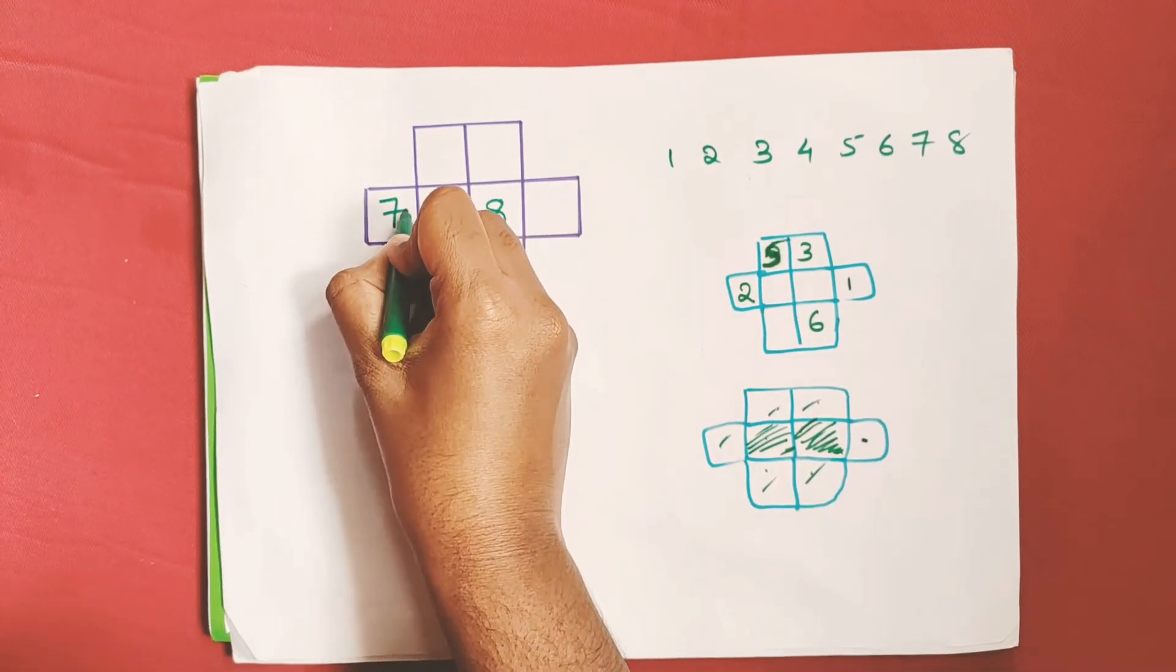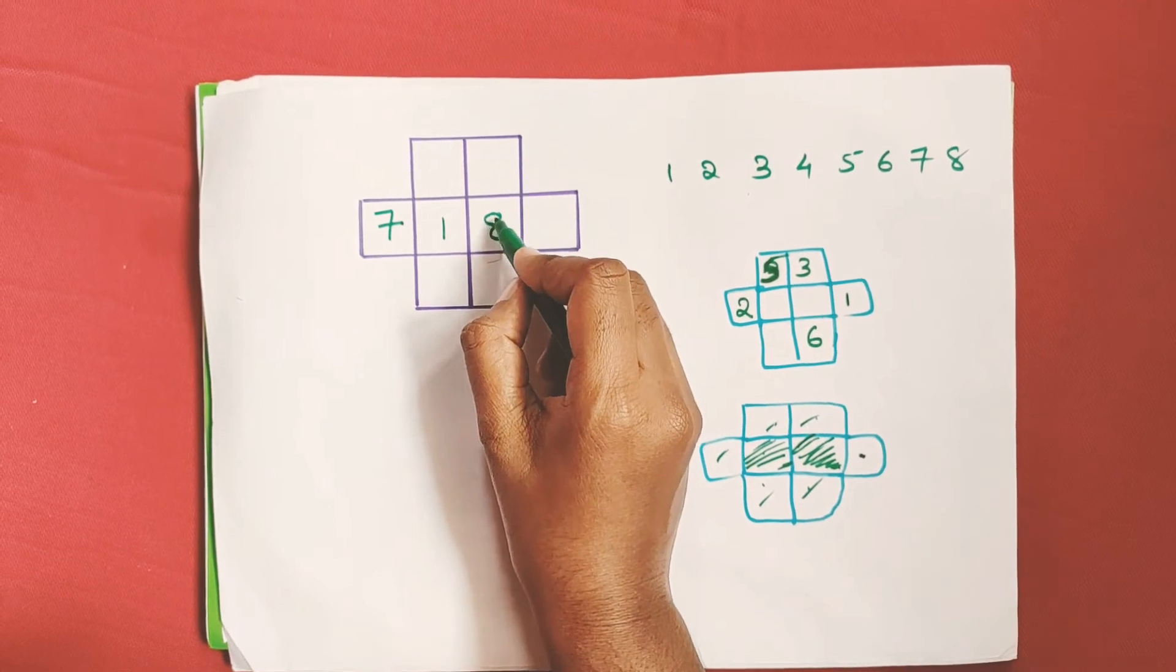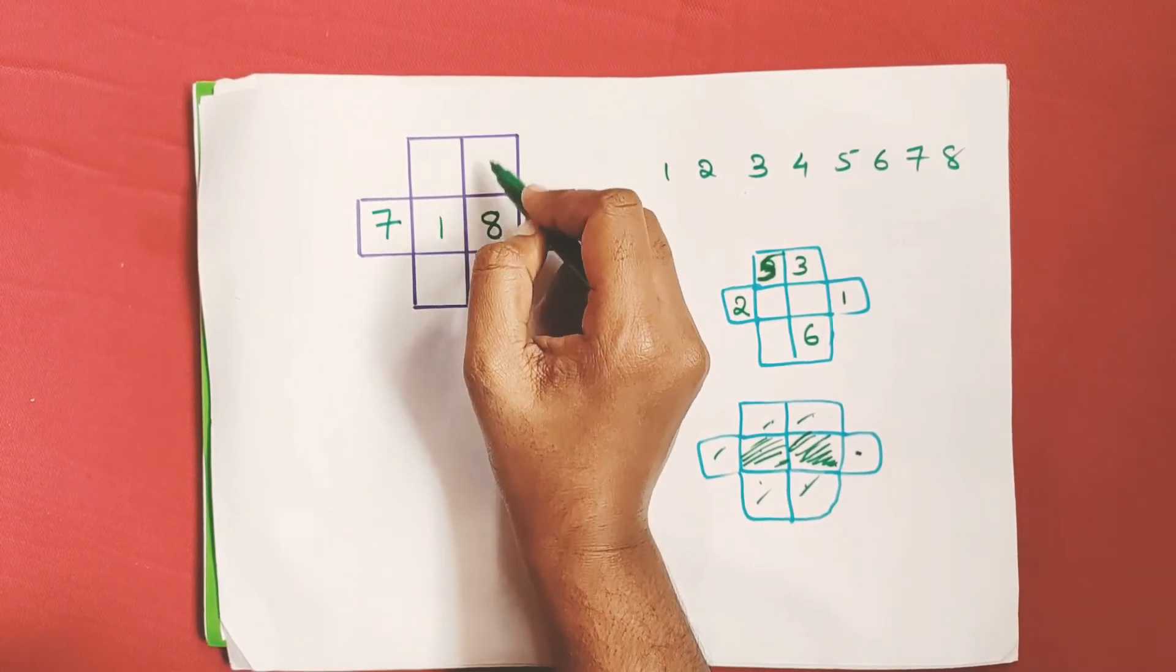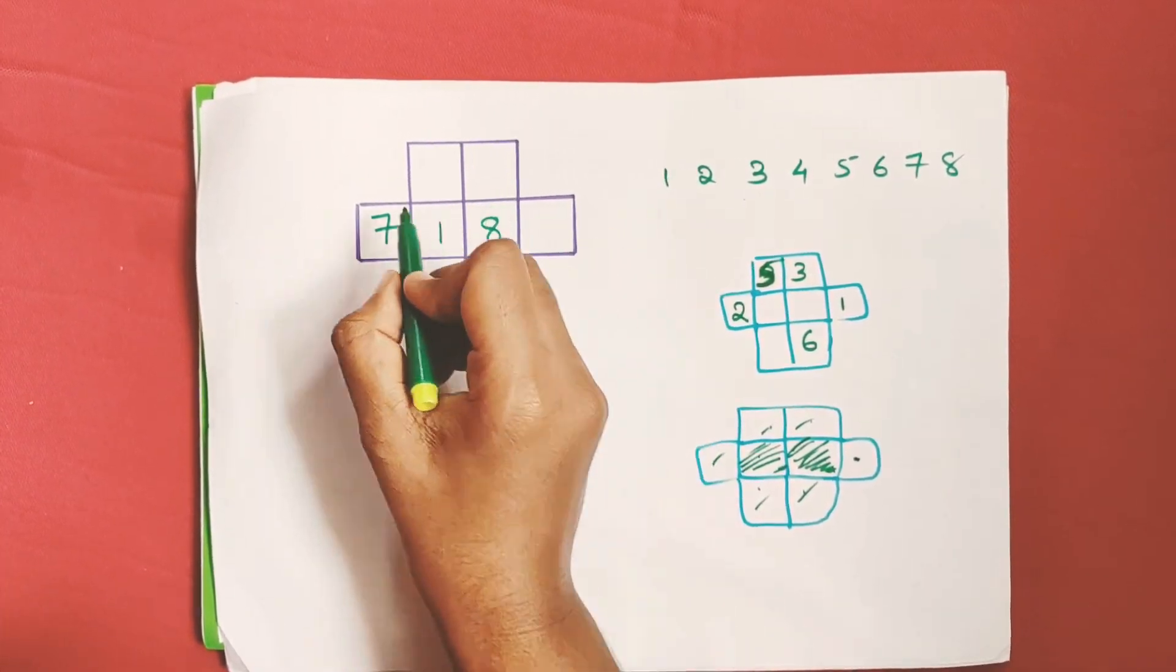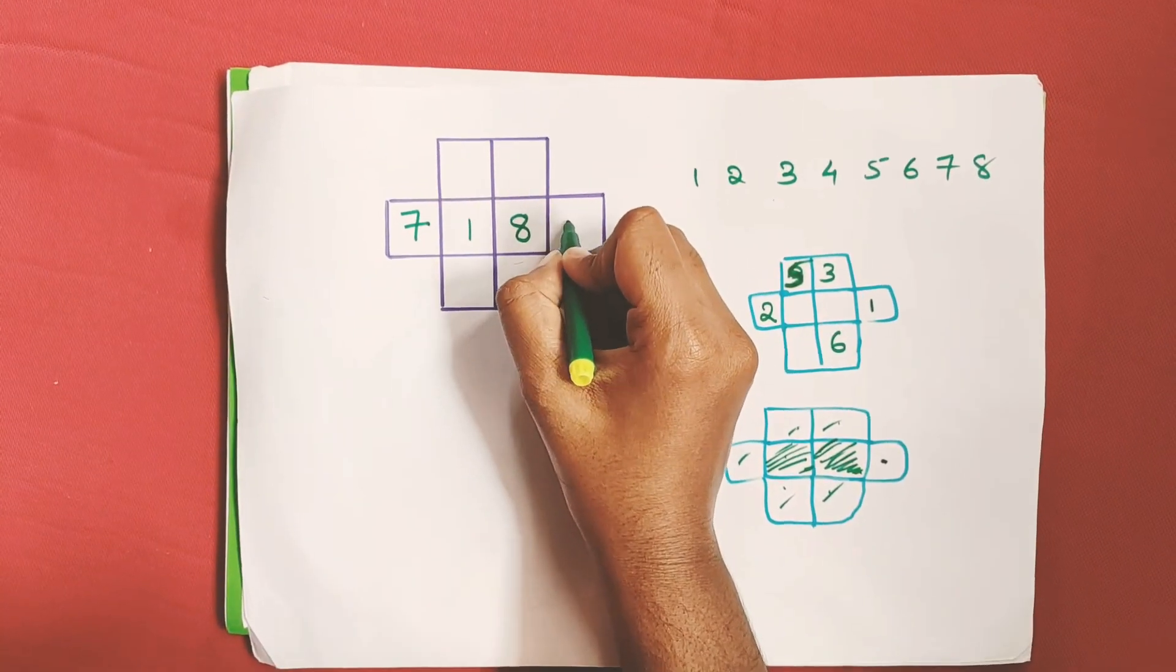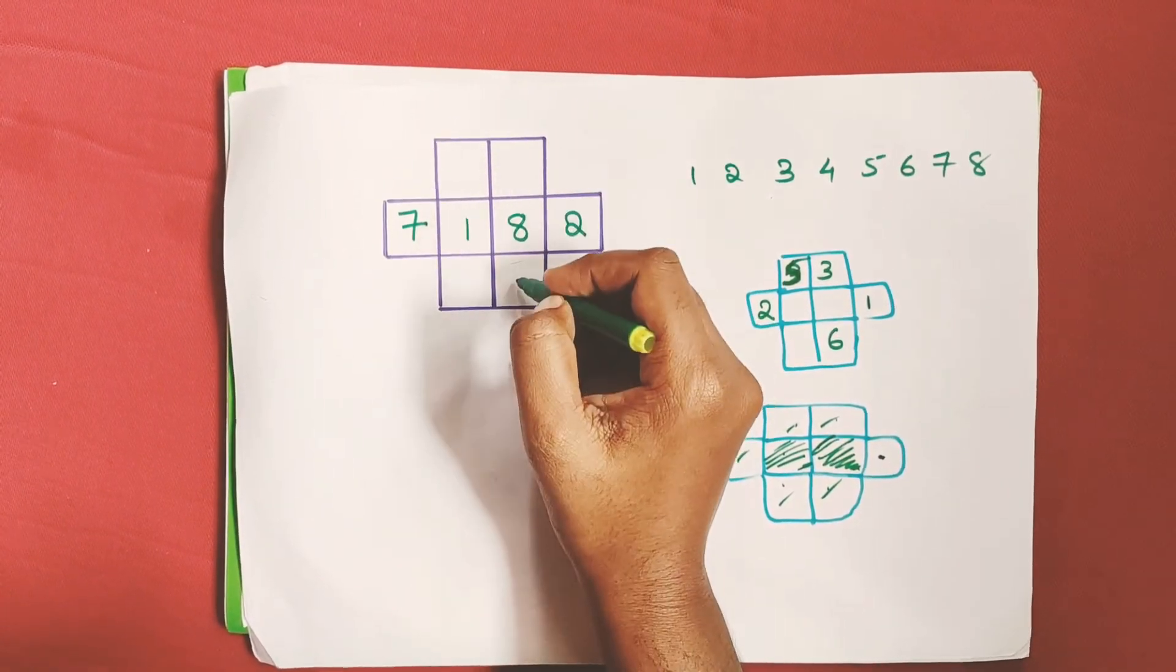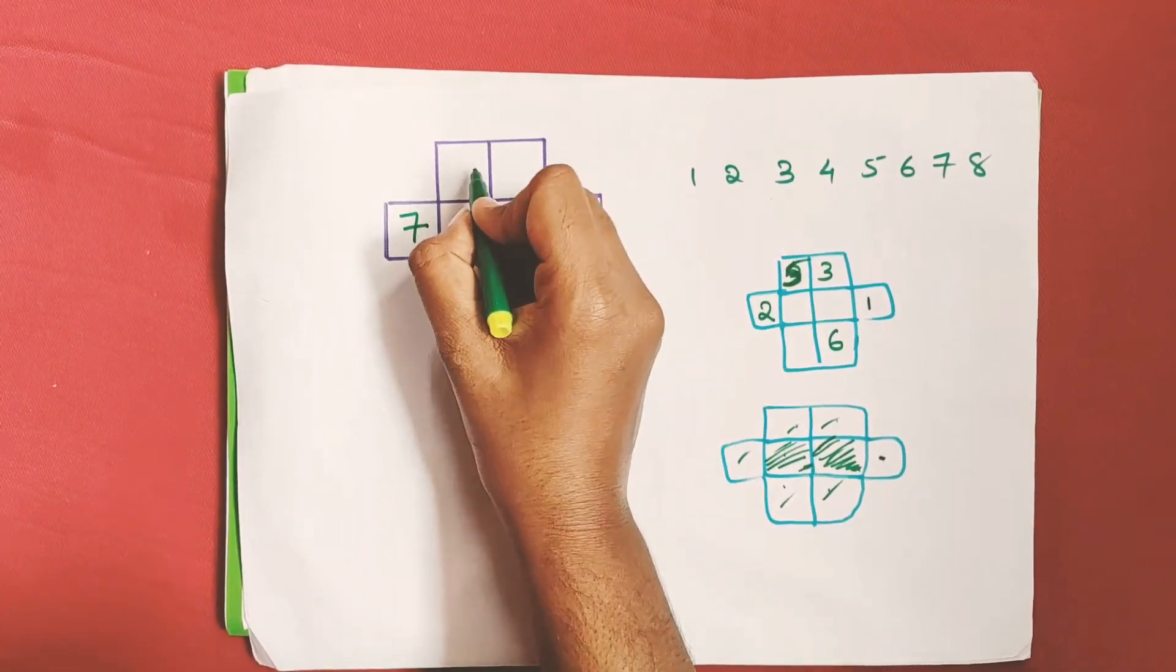7 must be placed here because if placed anywhere else it will be adjacent to 8. So 7 goes here, 2 goes here, 3 can't be placed here so I'm placing 3 here.